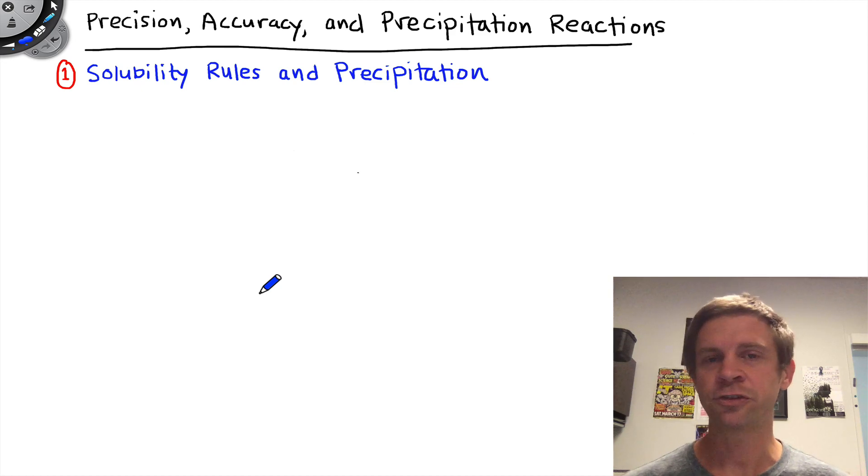The title of this experiment is Precision, Accuracy, and Precipitation Reactions. It deals with fundamental foundational techniques for the chemistry laboratory, as well as foundational concepts for working up experimental data in the form of precision and accuracy, and finally a fundamental reaction type known as precipitation, which involves the formation of a solid from liquid solutions.